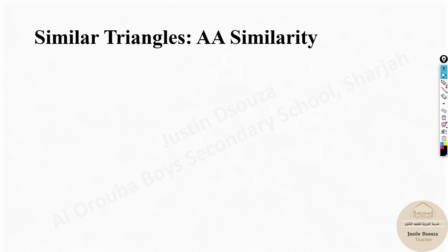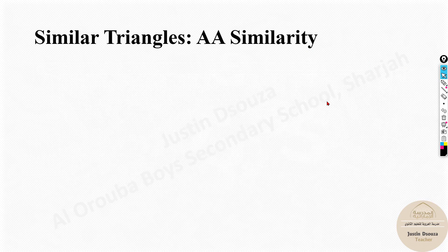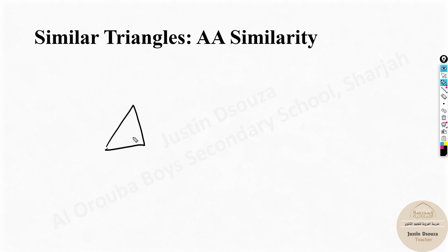Now let's look at what AA similarity is. When two triangles have at least two corresponding angles that are equal, they are similar. Imagine two triangles - one smaller, one bigger - where this angle is the same as that one, and this angle over here is the same as that one. What about the third angle? From the triangle angle sum theorem...